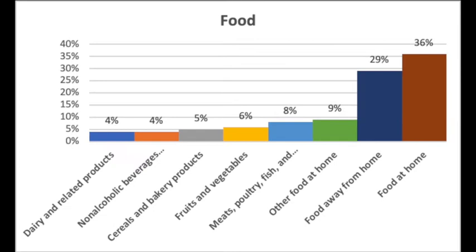Taking a look at food: dairy-related products 4%, non-alcoholic beverages 4%, cereal and bakery products 5%, fruits and vegetables — you've got to get your five portions a day as we say in the UK — that's a 6% weighting. Meats, poultry, and fish — basically animal protein — some 8%. Other food at home: 9%. Food away from home and restaurant meals: 29%. And finally, food at home: 36%.